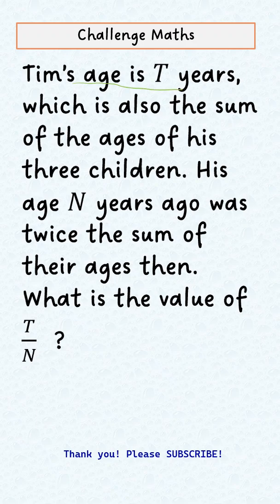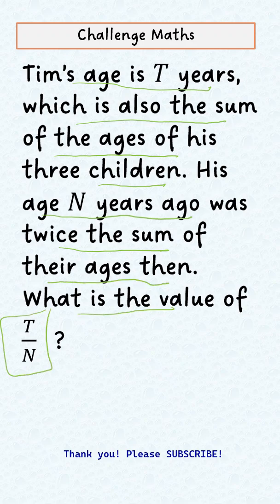Tim's age is T years, which is also the sum of the ages of his three children. His age N years ago was twice the sum of their ages then. What is the value of T over N?